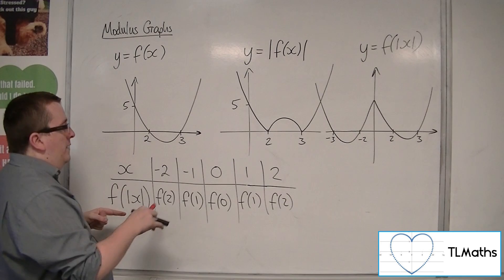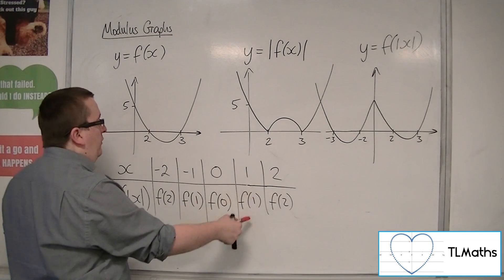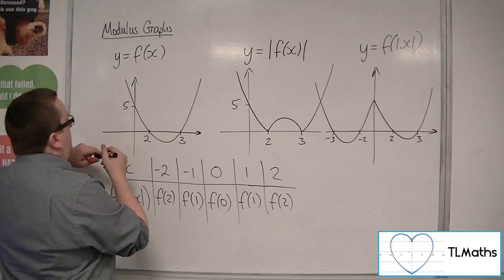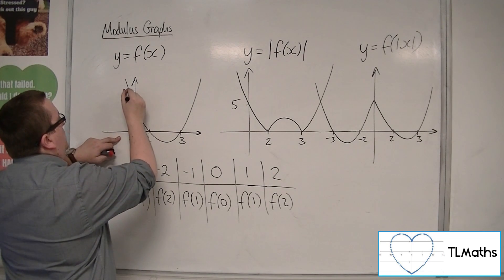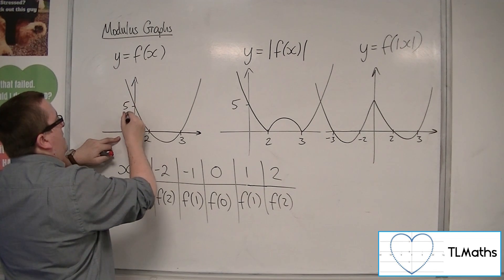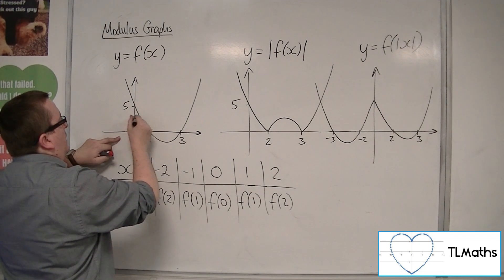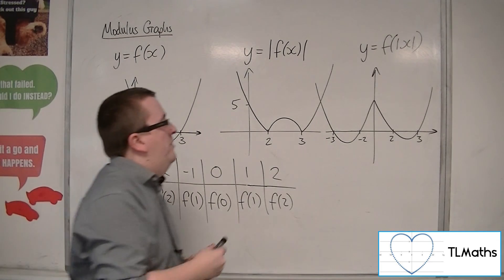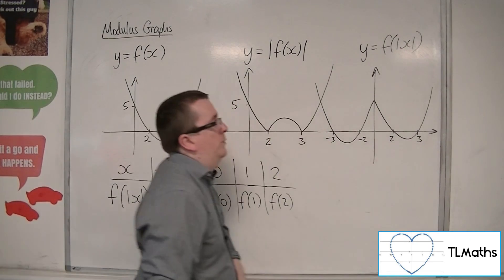Because when x is 1, or when x is minus 1, I get f of 1. Previously, I would have got this value up here that is greater than 6 when I substitute in minus 1. But I'm now getting the same value that I would get if I substituted in 1. And this is the type of graph that I would face.